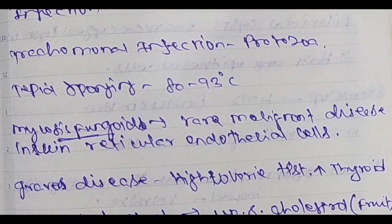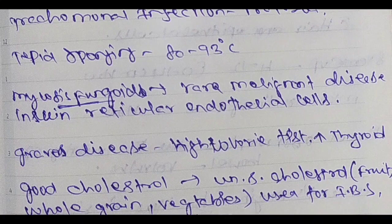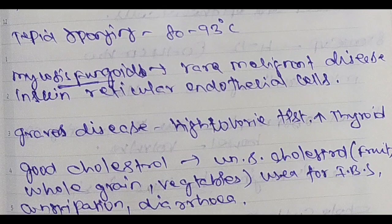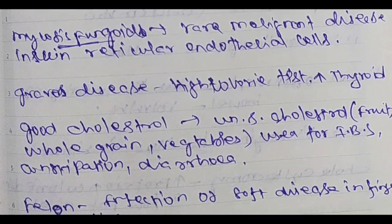Then trichomonal infection — protozoa. Protozoa causes trichomonal infection; tepid sponges 80 to 93 degrees. Mycosis fungoides — rare malignant disease in skin reticular endothelial cells.